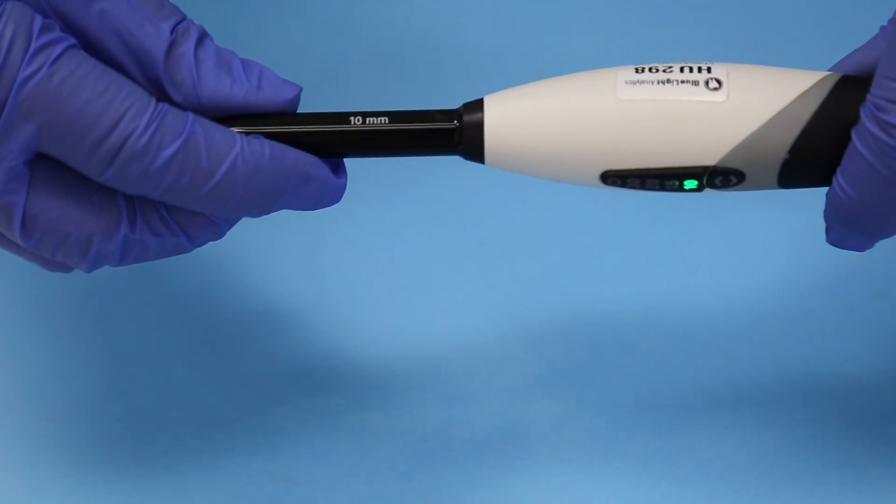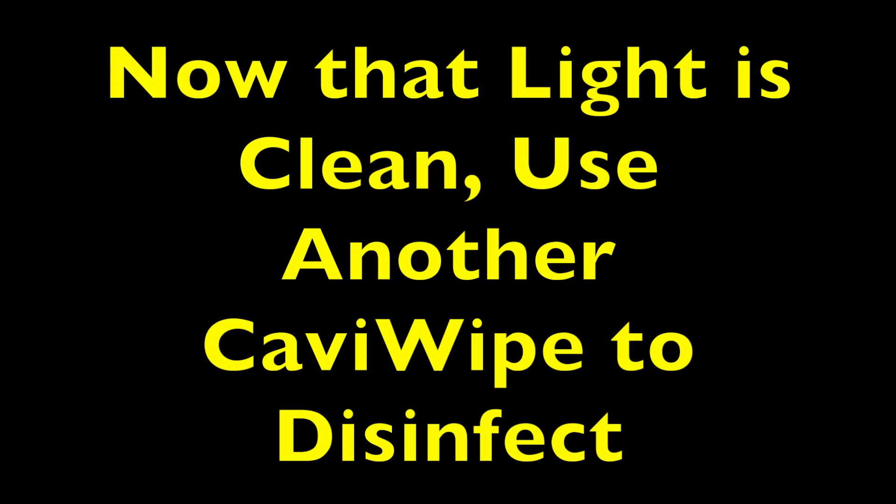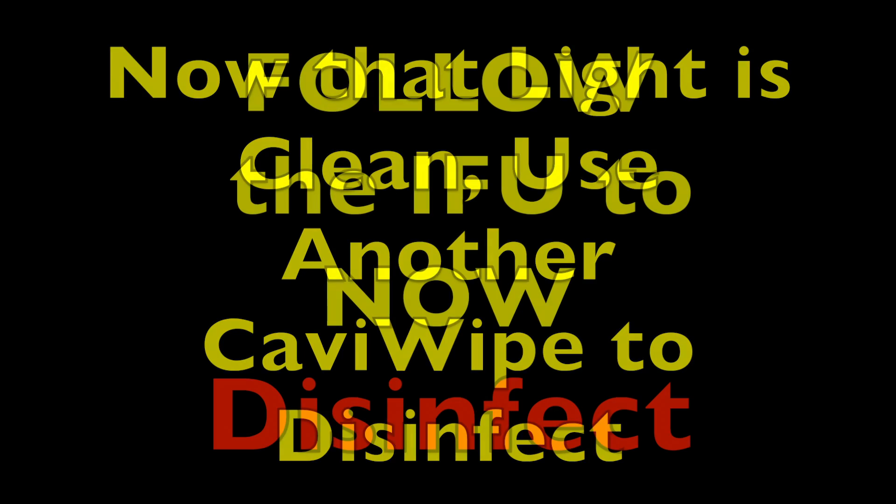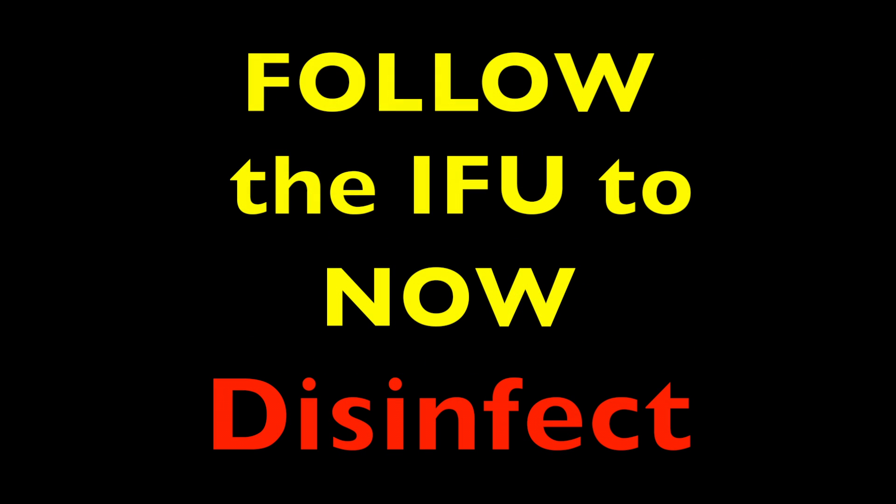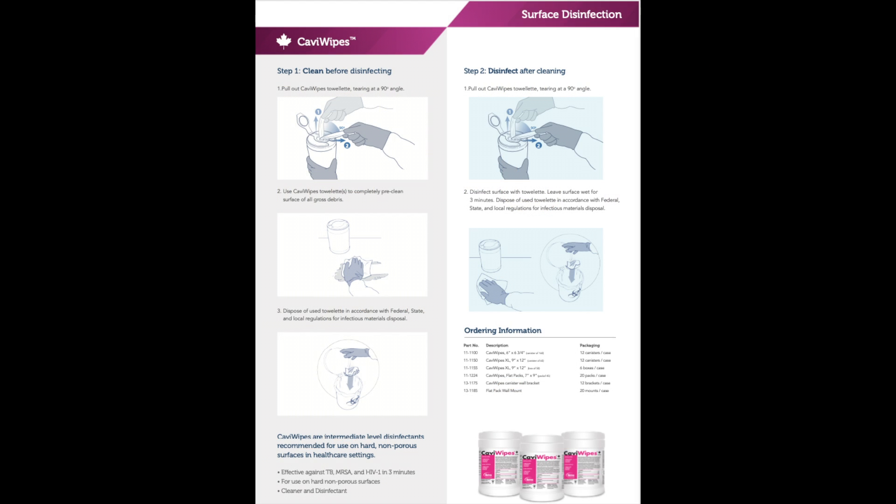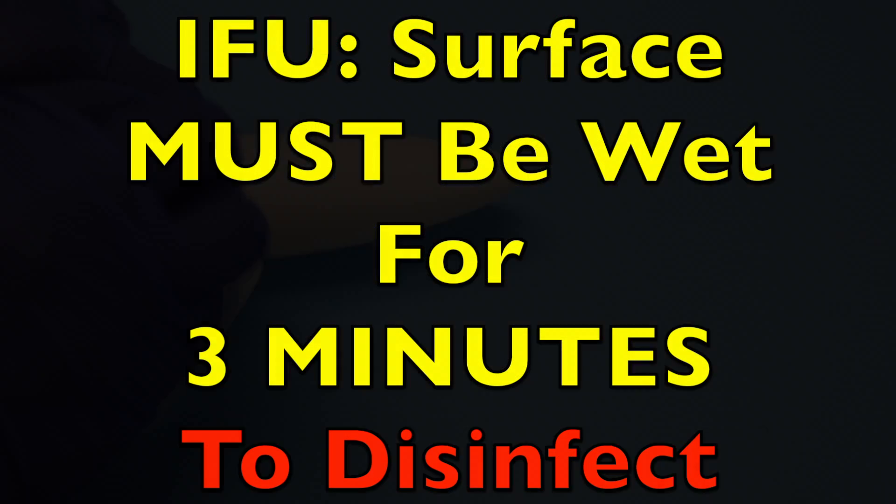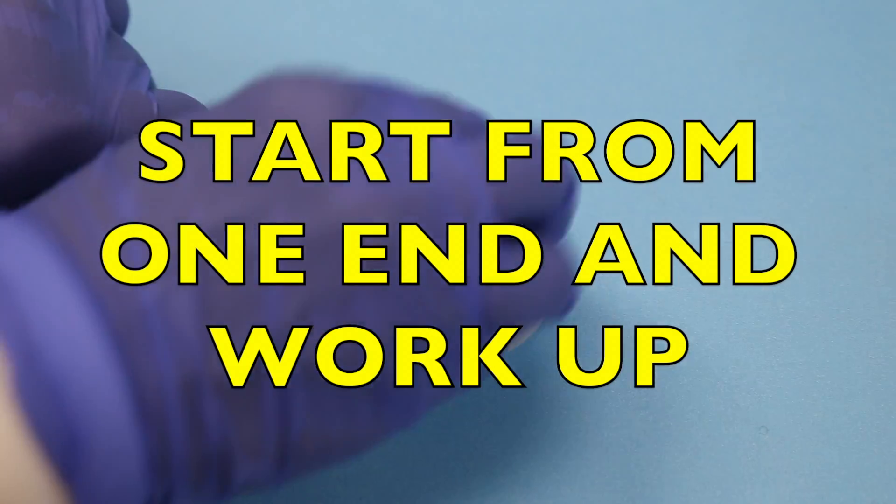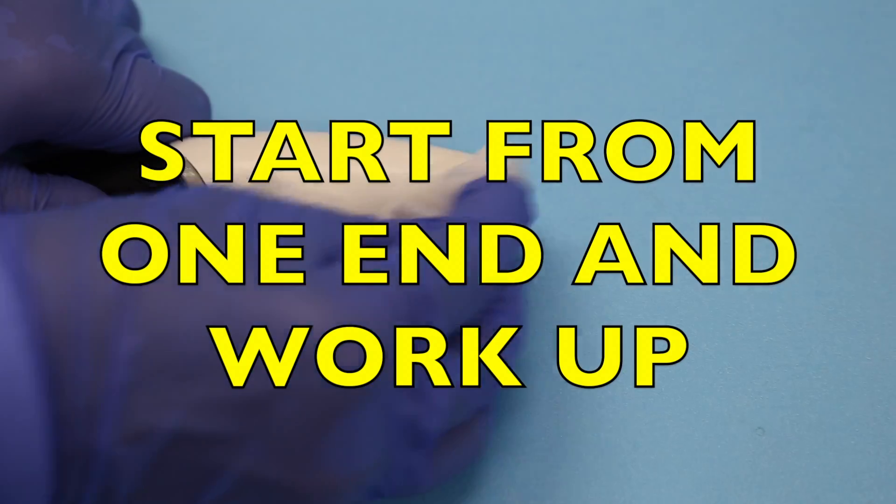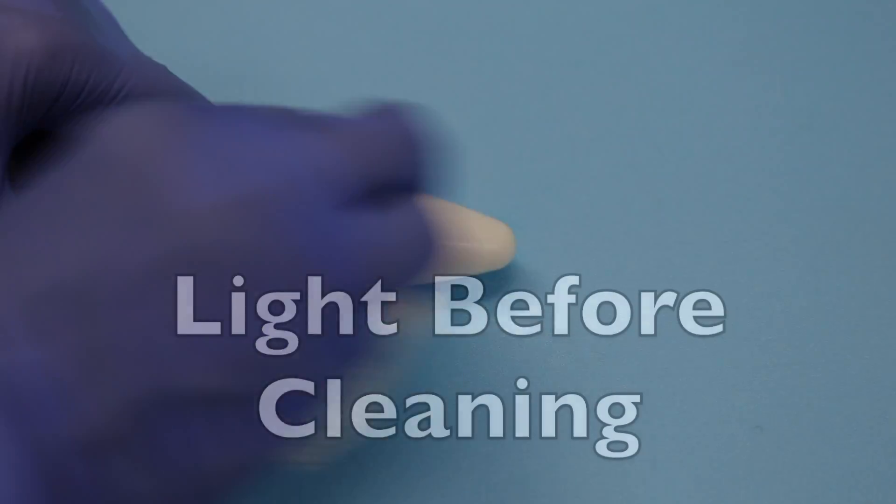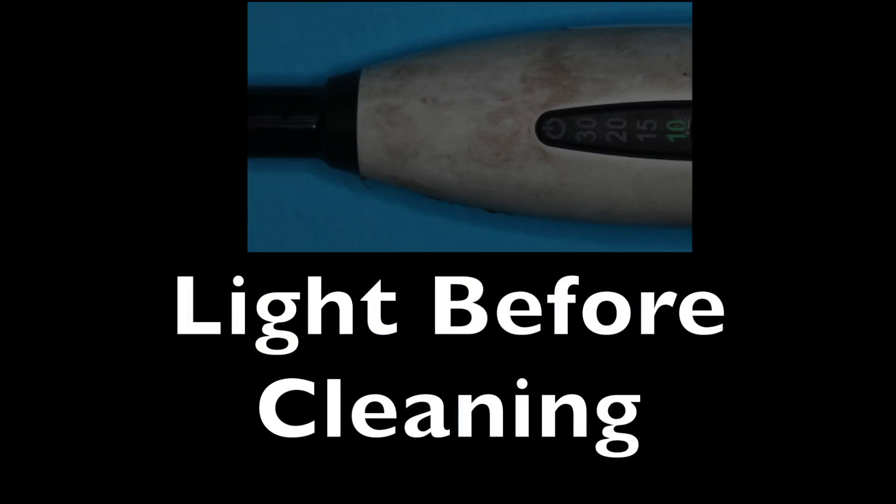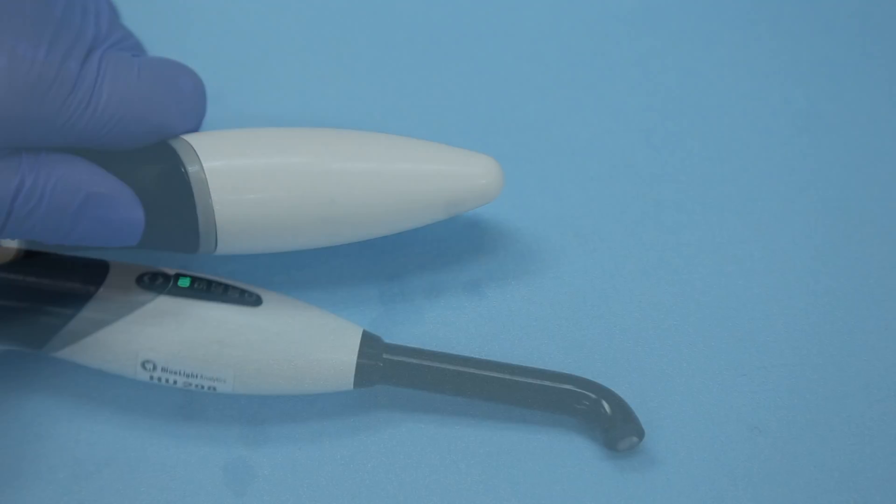Now that the light is clean, it's ready to be disinfected. Always follow the instructions for use and make sure that the surface is left wet for the recommended amount of time. In this case, three minutes. So once again, we'll start from one end and work our way up. And at the end of all this, the light that was once dirty, such as this, is now clean like this.